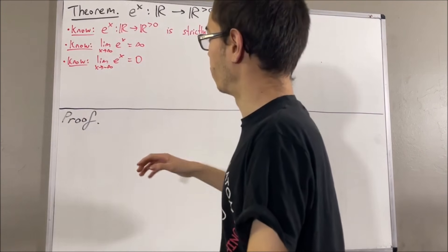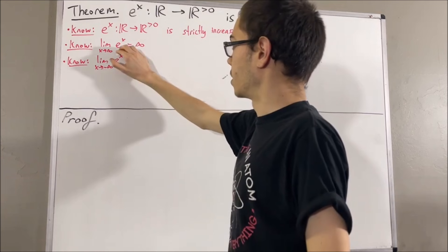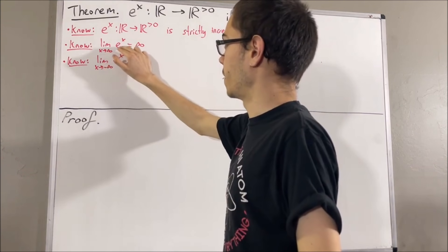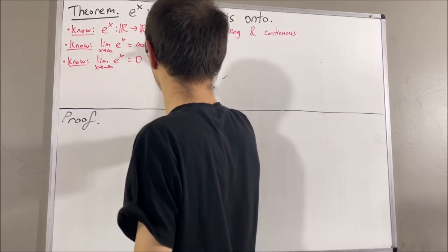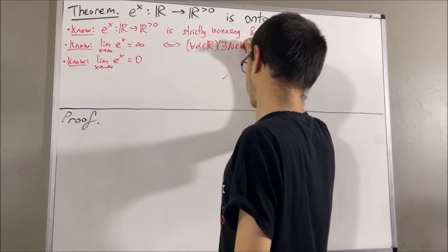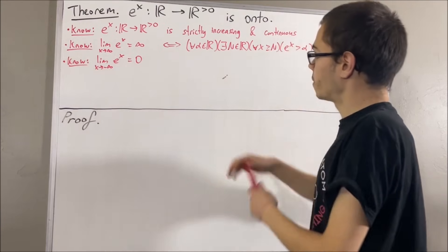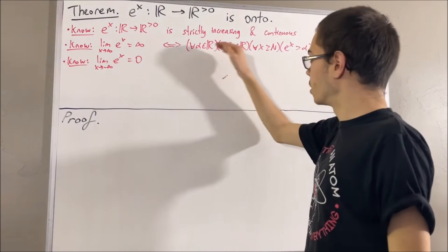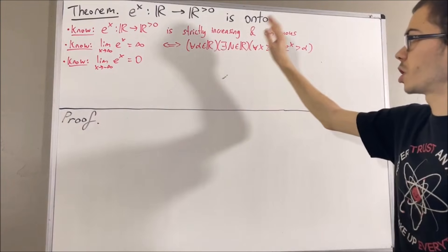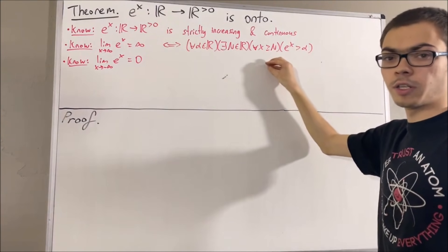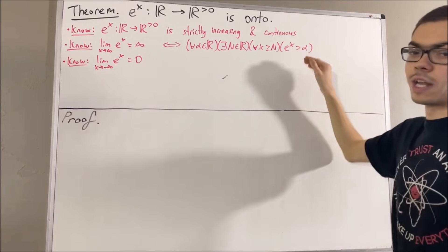Now, it's going to be important to write out what these two things mean. To say that the limit as x approaches infinity of e^x equals infinity means the following: for every α in the real numbers, there exists a capital N in the real numbers, such that for all real numbers x ≥ N, e^x > α.